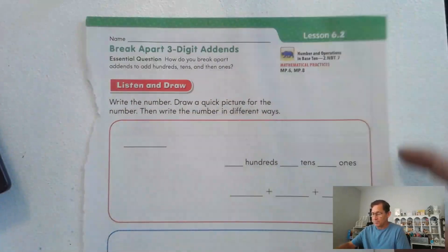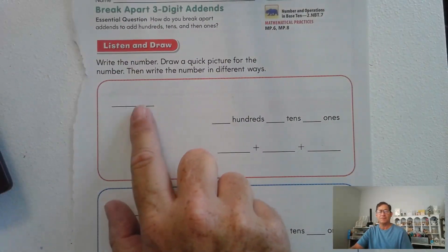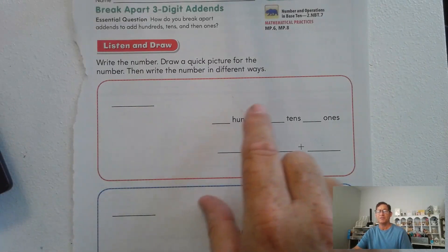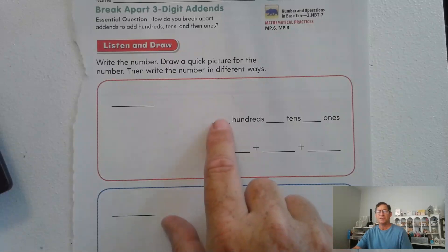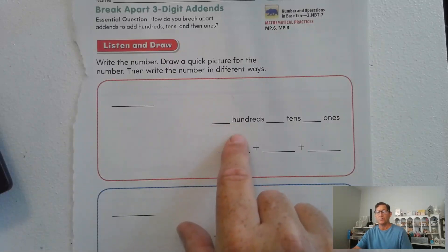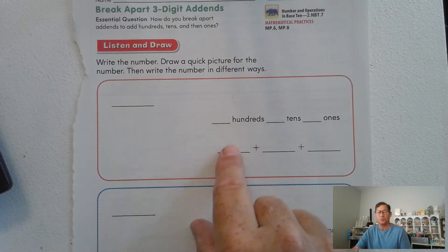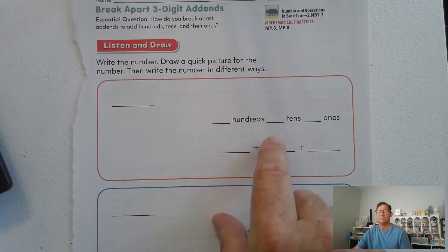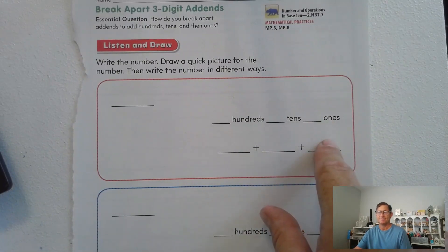Listen to the following problem. I want you to write the number I give you, then tell me how many hundreds, how many tens, and how many ones it has. Then tell me the value of each. So if I have two hundreds, you write two hundred. If I have five tens, you write fifty. If I have eight ones, you write eight.